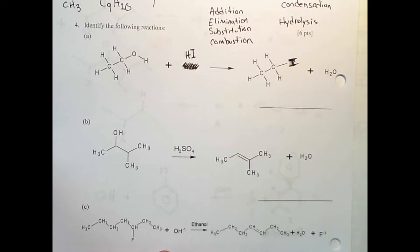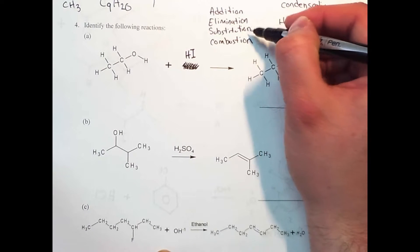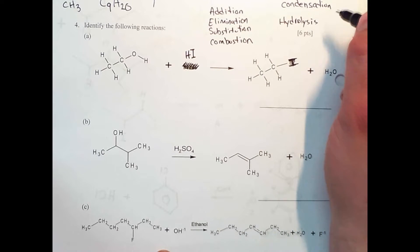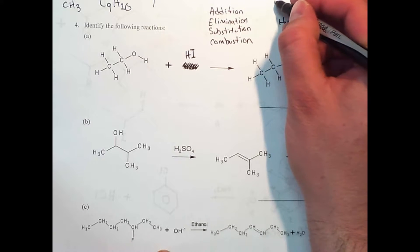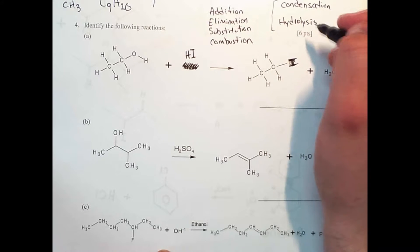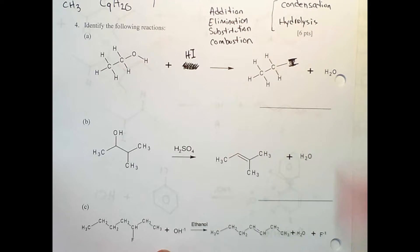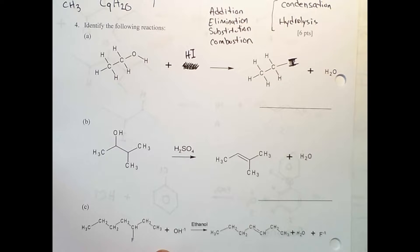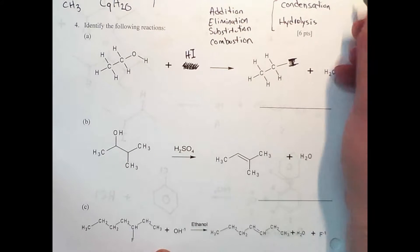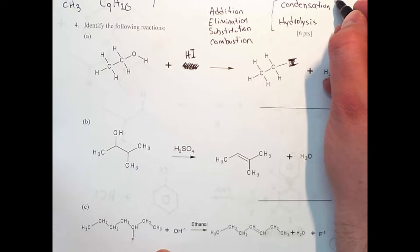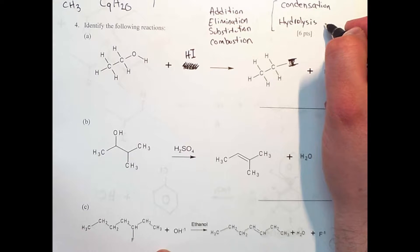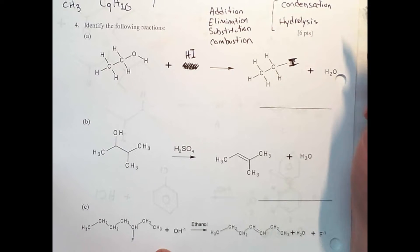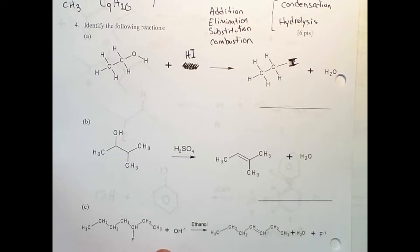For the next part, all we're going to do is identify our reactions. We've done addition, elimination, substitution, and combustion in detail, and then we have two other reactions: condensation and hydrolysis, which are opposites of each other. Hydrolysis has water as a reactant; condensation has water as a product. Condensation reactions put two small things together, and hydrolysis actually splits one big molecule into two smaller ones.